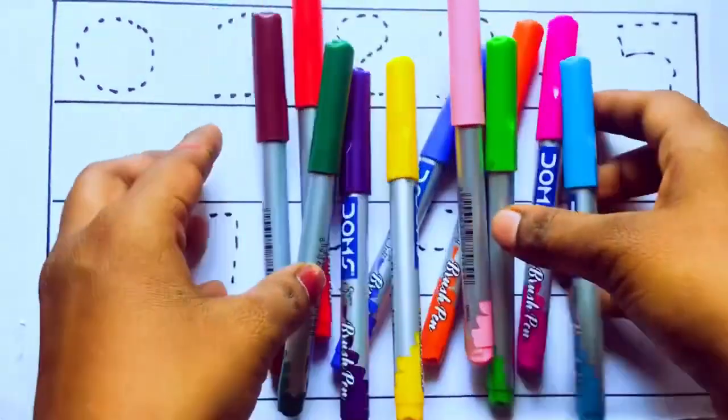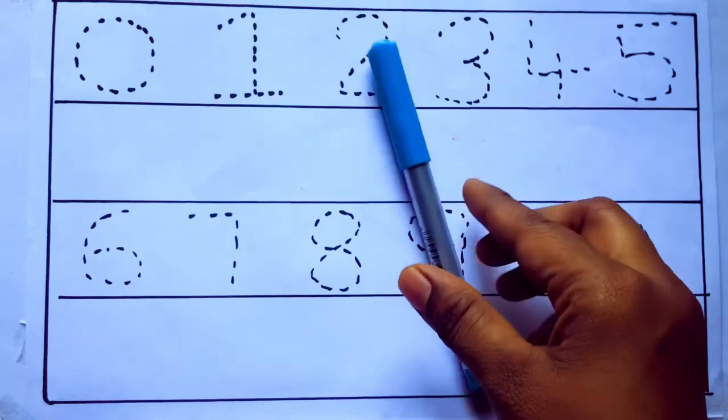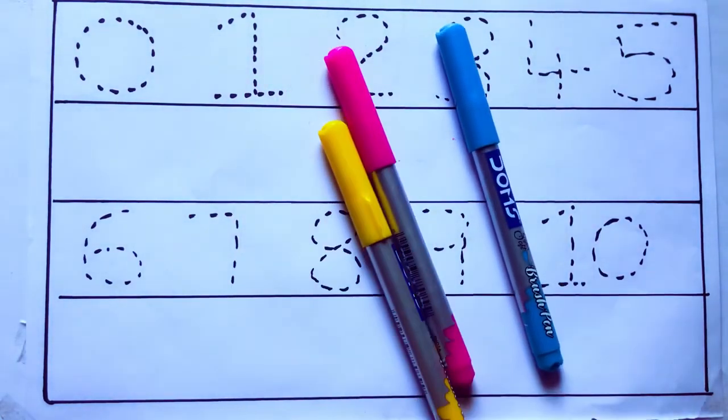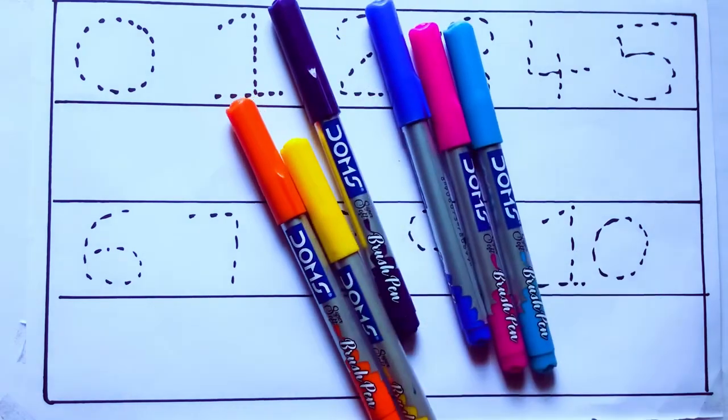Let's learn some colors. These are all the color pencils. Let's learn the names: sky blue color, pink color, yellow color, orange color, violet color, blue color, brown color.